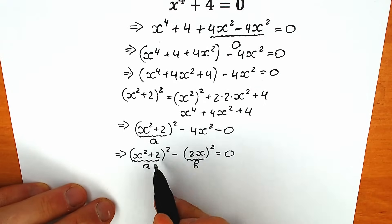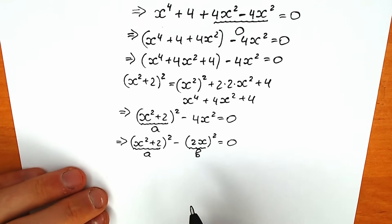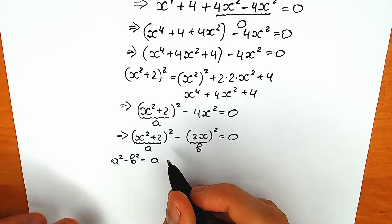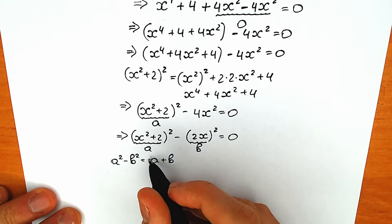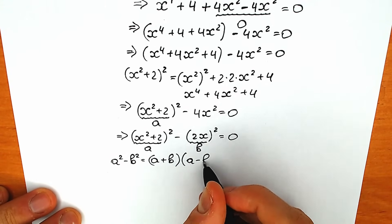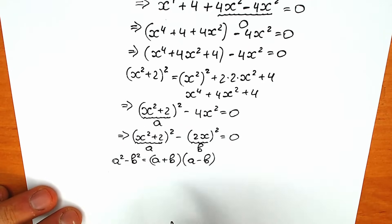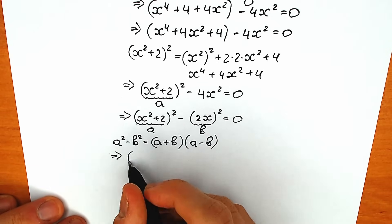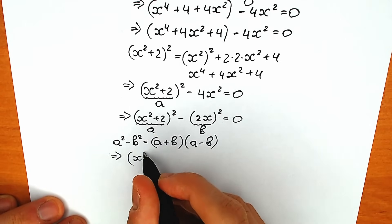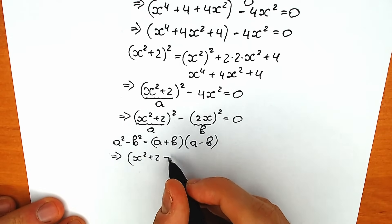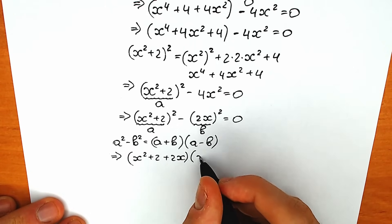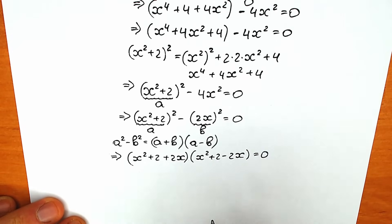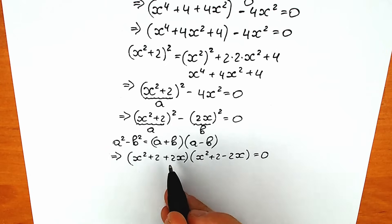Let's remember the difference of squares formula from school: a squared minus b squared equals a plus b times a minus b. We can factor our expression using this formula. As a result we have x squared plus 2 plus 2x, times x squared plus 2 minus 2x, equal to zero. This looks like two quadratic equations.